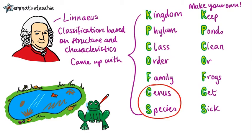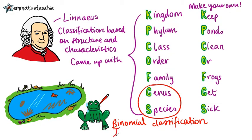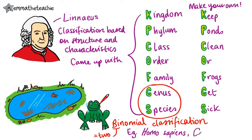The last two levels of classification make up the binomial classification of a species, which is just its two-part name. Remember, bi means two. So if you're asked for the species name or binomial name, you always give the genus and the species part. For example, humans are Homo sapiens, and wolves are Canis lupus.